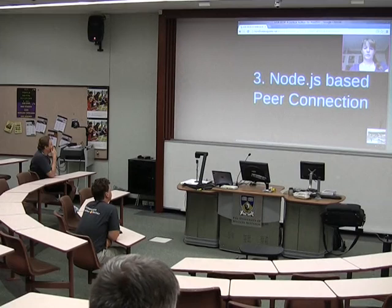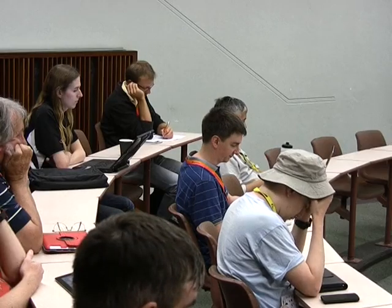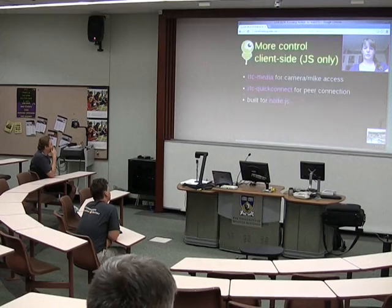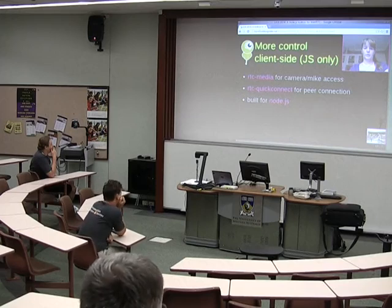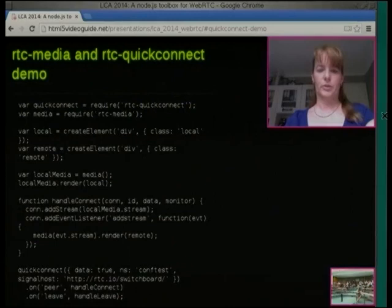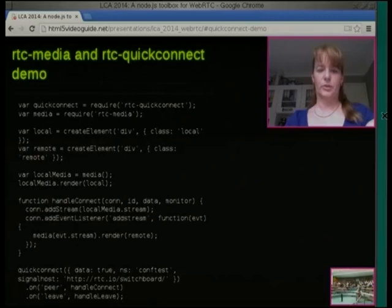Now if you want to do everything in JavaScript — you don't want to do it with HTML — the third approach we have is a JavaScript-based peer-to-peer approach. It gives you more control on the client side, but you need to use two lower-level libraries called RTC Media and RTC Quick Connect, which are built for Node.js. This does exactly the same as the little bit of HTML code I had before, except it uses Quick Connect and RTC Media to set up your local and remote video. You have to add stream, add event listeners, and run Quick Connect and connect some functions — more work, but you get a lot more control.